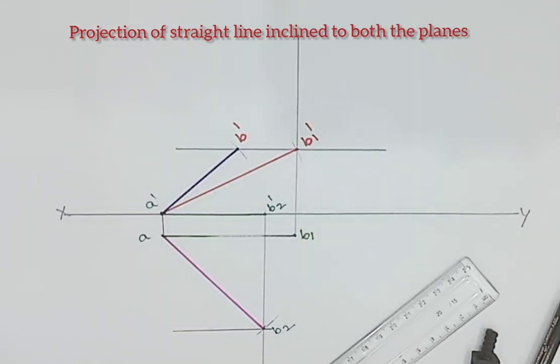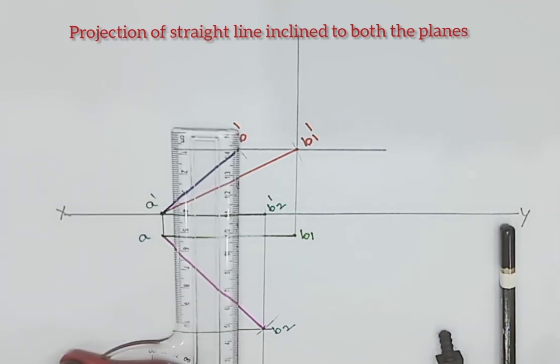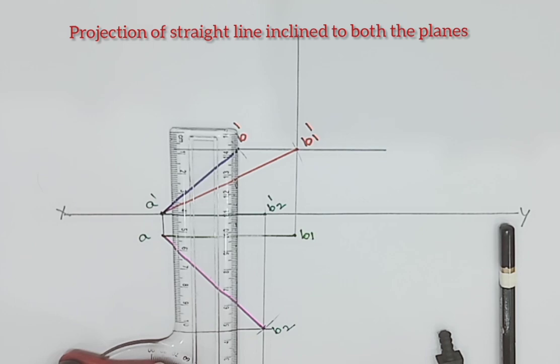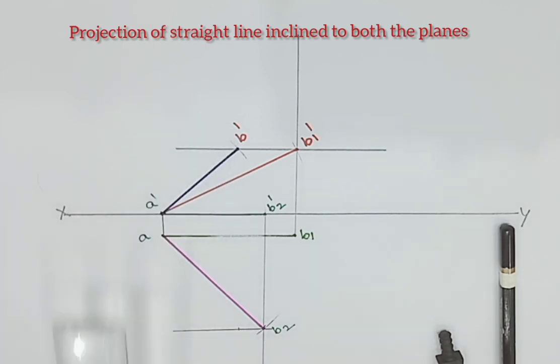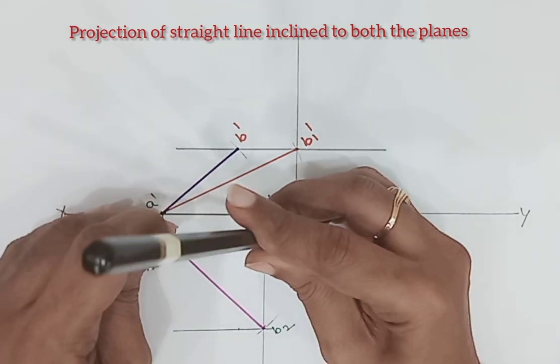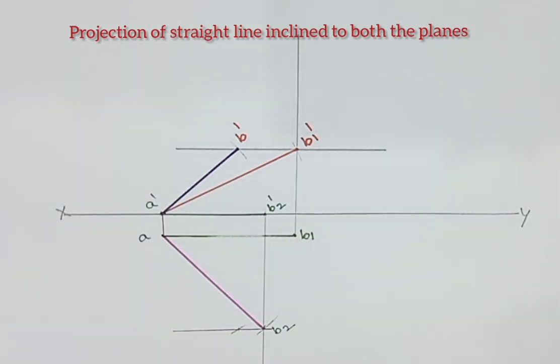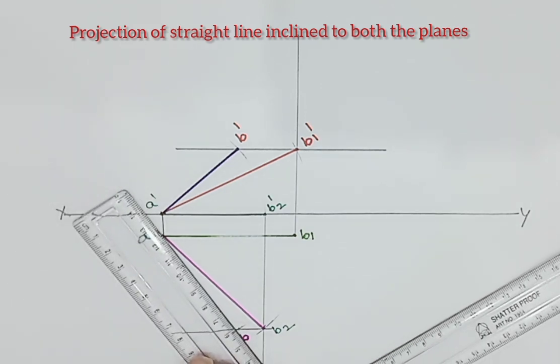Then A as a center, AB1 as a radius, draw an arc. Name this point as B. Join AB in top view.